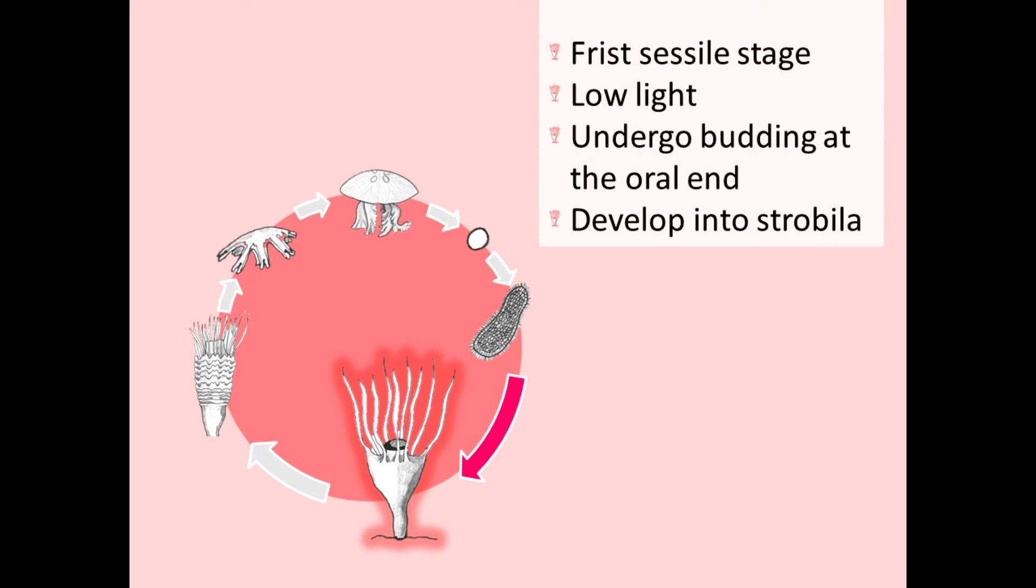The scyphistoma is the polyp stage in the life cycle of Aurelia. This stage is attached to a hard substrate often in low light. After feeding, it will undergo budding at the apical end and develop into a strobila.